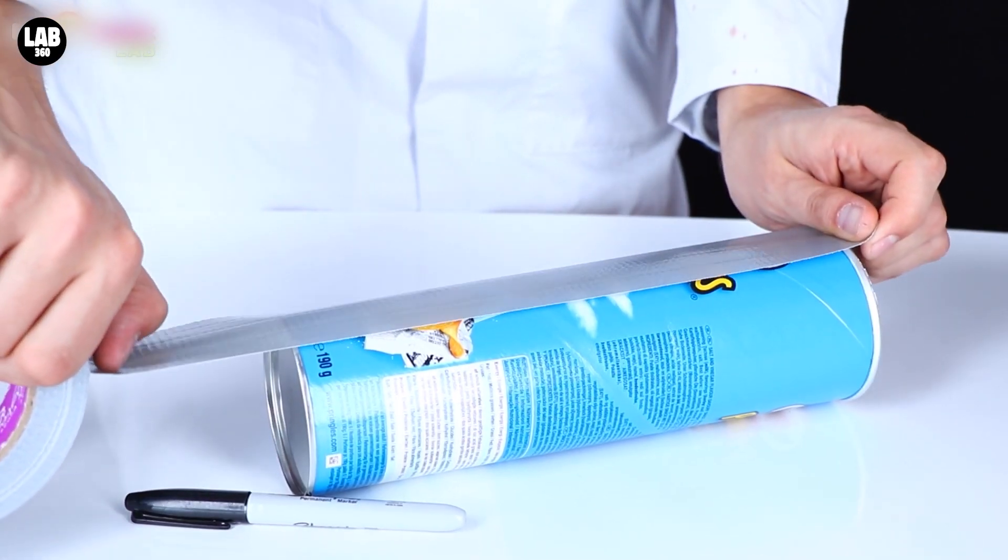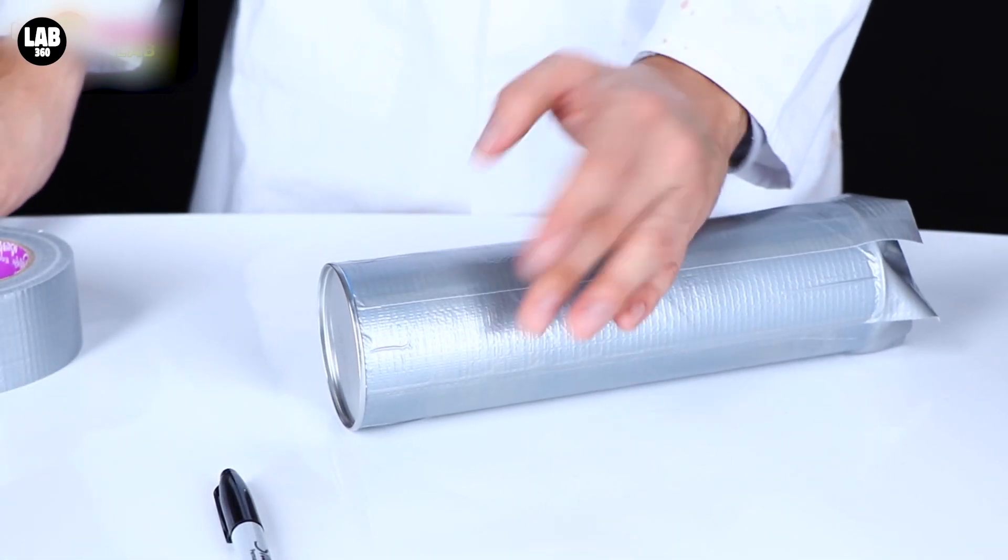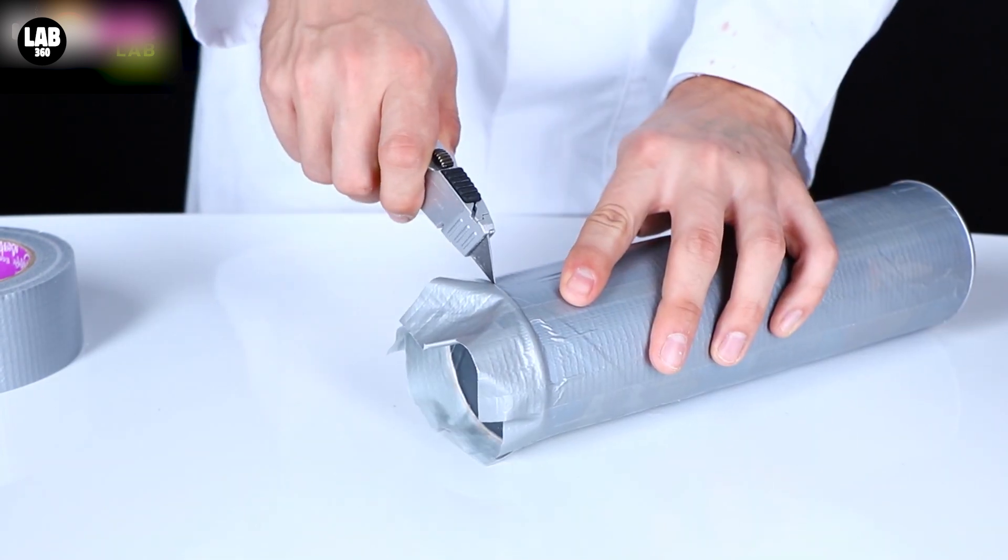Once again, cover your tube in tape. This will help to strengthen it and will also make it look a bit better. Remove any excess with your knife or a pair of scissors.